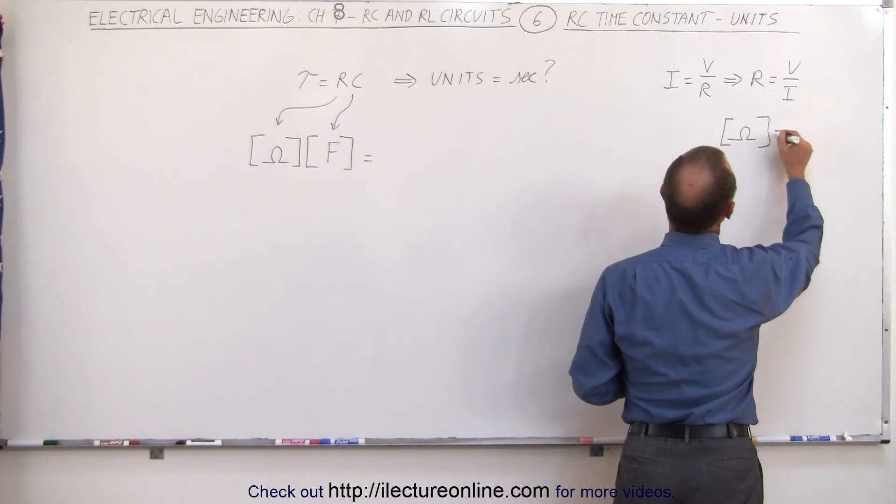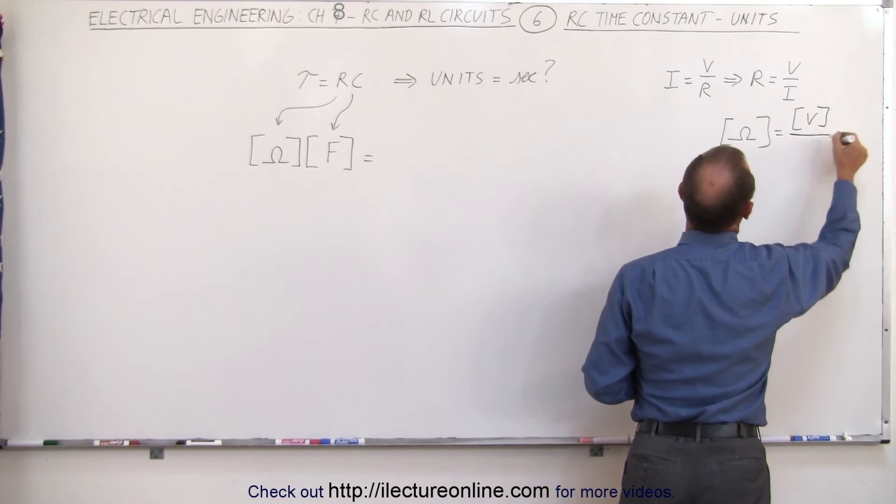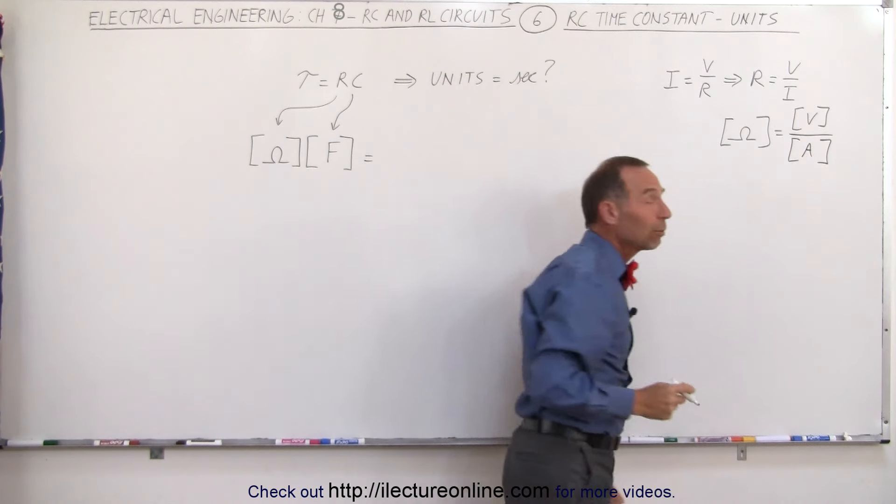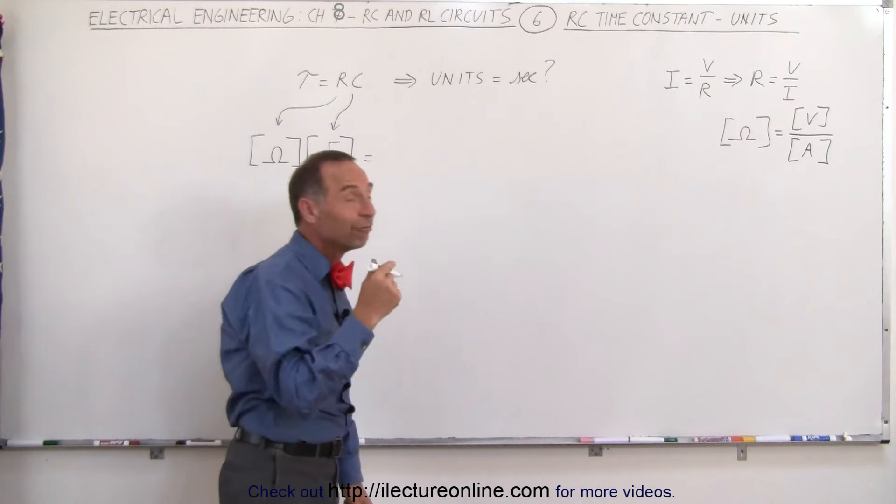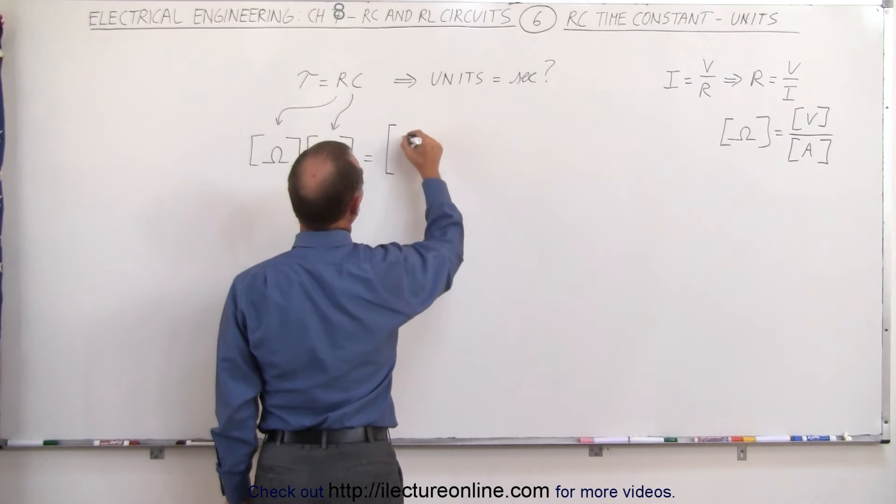So the units of ohms equal the units of voltage, which is volts, divided by the units of current. The units of current is amps. So we can replace the units of ohms by volts divided by amps. So this can be written as the ratio of volts divided by amps.